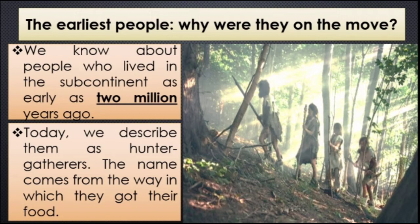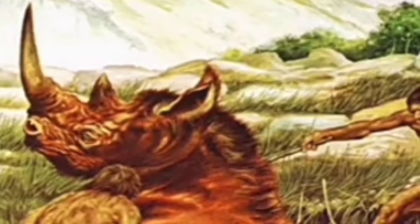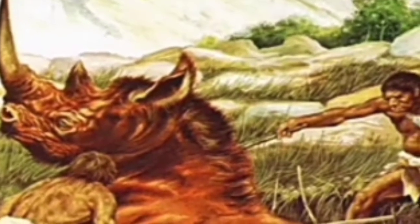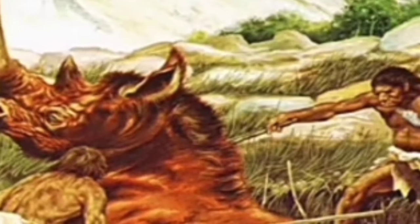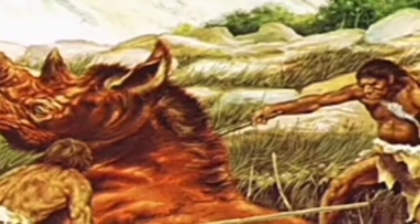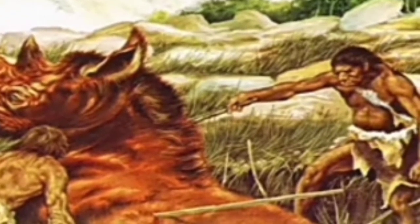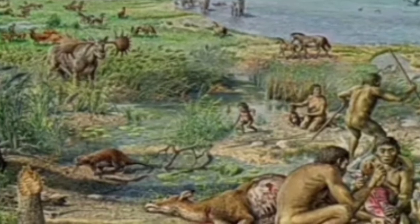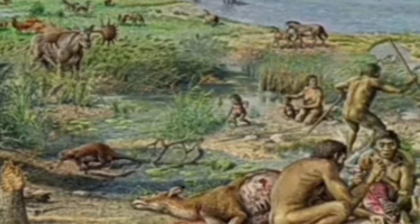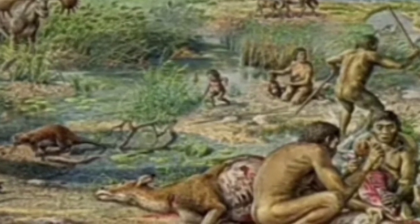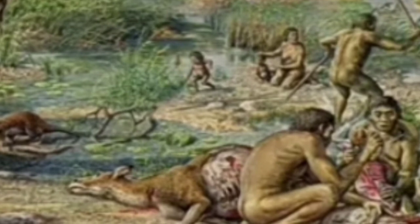We call them hunter-gatherers. Why do we call them hunter-gatherers? Because those people used to do the task of hunting. Hunting means killing animals like goat, buffalo, deer — any kind of animal that was in the forest — and eating them. It was a source of survival for them.